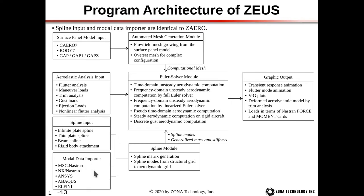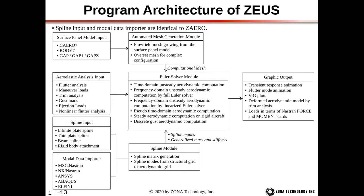For the structural input, the modal data importer can import MSC Nastran, NX Nastran, Ansys, Abaqus, Alfini, Astros, and free format inputs — identical to Z-Aero. The spline input maps the aerodynamic surface panel model to the structure model using the infinite plate spline, thin plate spline, beam spline, and rigid body attachment. The spline module generates the spline matrix and spline modes from the structure grid to the aerodynamic grid. With the aerodynamic model, structure model, and spline, we also have aeroelastic analysis inputs. Within Zeus, we can do flutter analysis, maneuver loads analysis, trim analysis, gust loads, ejection loads, and nonlinear flutter analysis — all feeding into the Euler solver module.